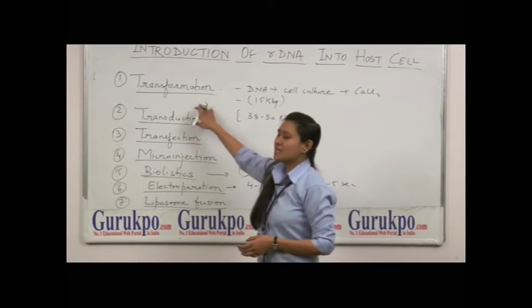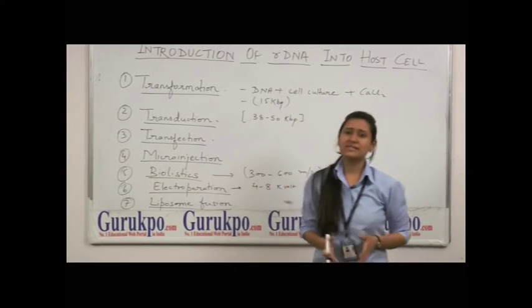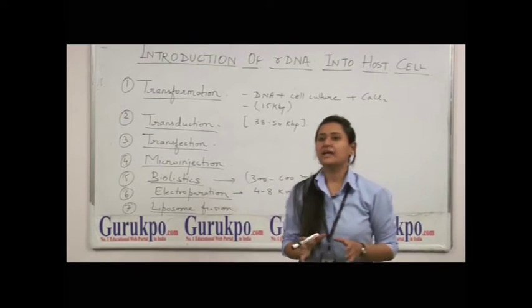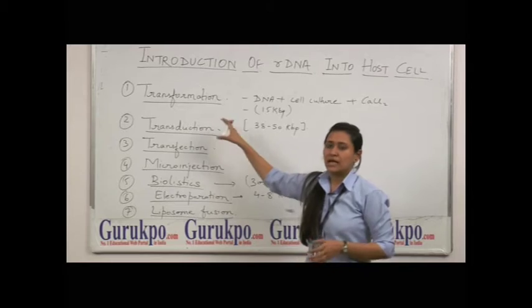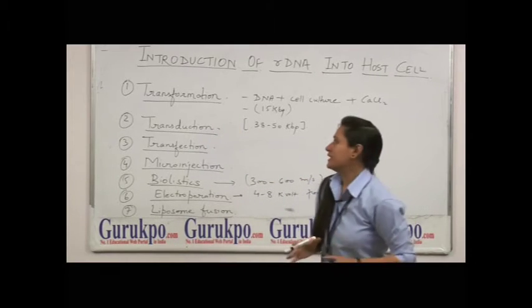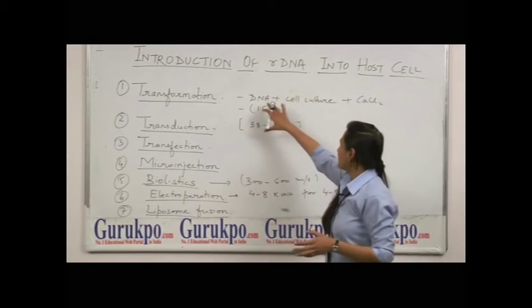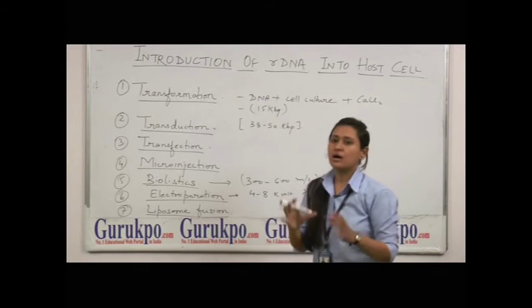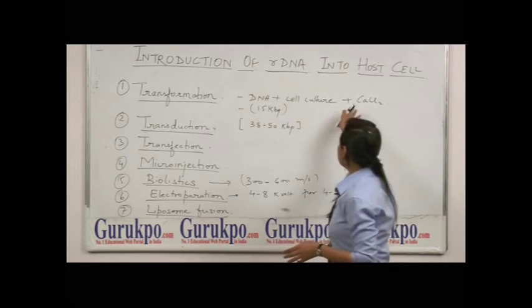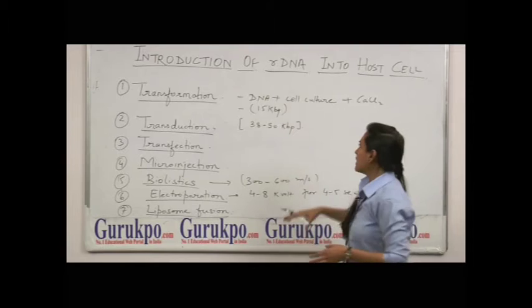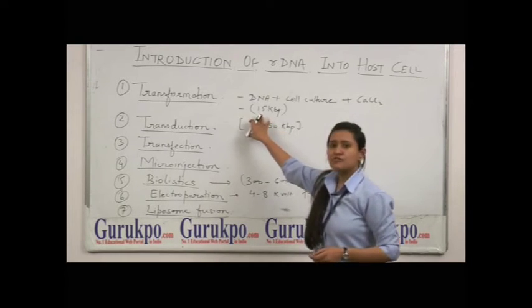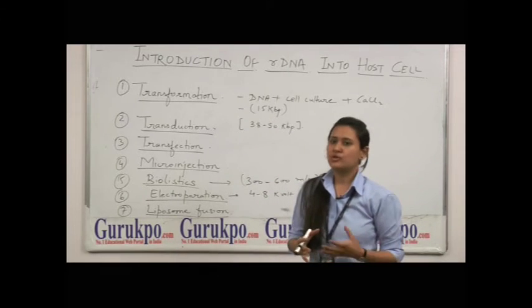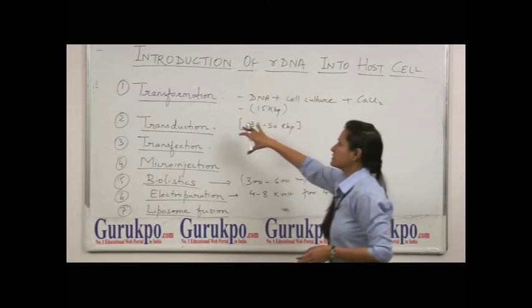Number one is Transformation. This is a technique in which naked DNA is inserted into the bacterial cell from the culture medium. We can also add calcium chloride to that. A size of 15 kilobase pair can be used to introduce in case of transformation.